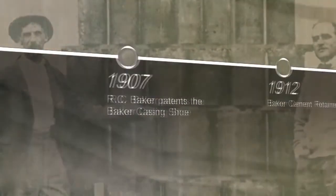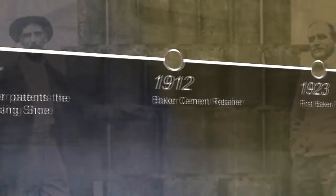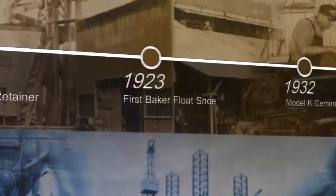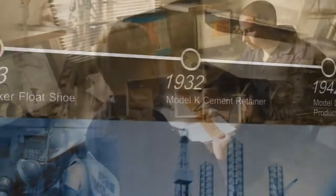Liner drilling is not new to Baker Hughes. As far back as 1907, Reuben Baker introduced the Cable Drill Casing Shoe. Baker Hughes also holds numerous patents within this area.